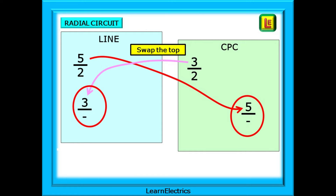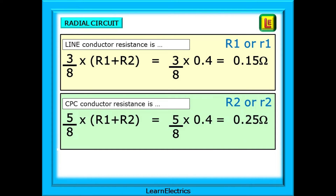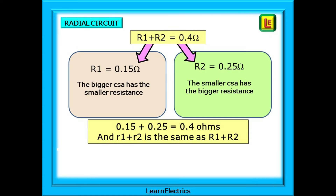Swap the tops: the 5 for the line goes onto the CPC side, and the 3 for the CPC crosses onto the line side. Now add the two top numbers — 3 plus 5 is 8. Then put 8 on the bottom of each fraction to give us 3 over 8 on the line side and 5 over 8 on the CPC side. These are called the multiplier fractions. We can now calculate the values of r1 and r2 as separate resistances. We already know the effective resistance is 0.4 ohms. For the line, 3 eighths of 0.4 is 0.15 ohms. For the CPC, 5 eighths of 0.4 is 0.25 ohms. Adding the two results together, we are back to 0.4 ohms, as we would expect.